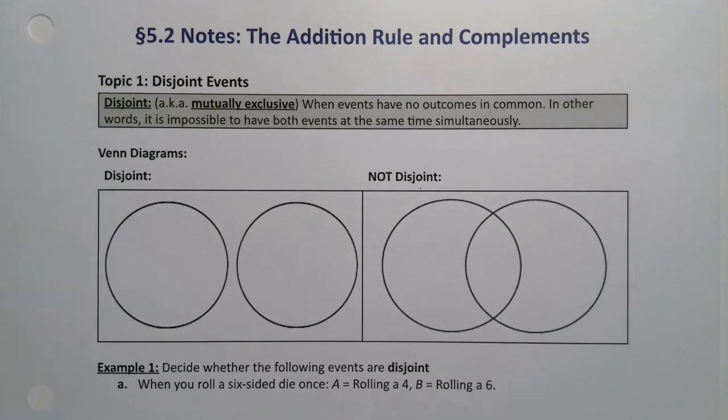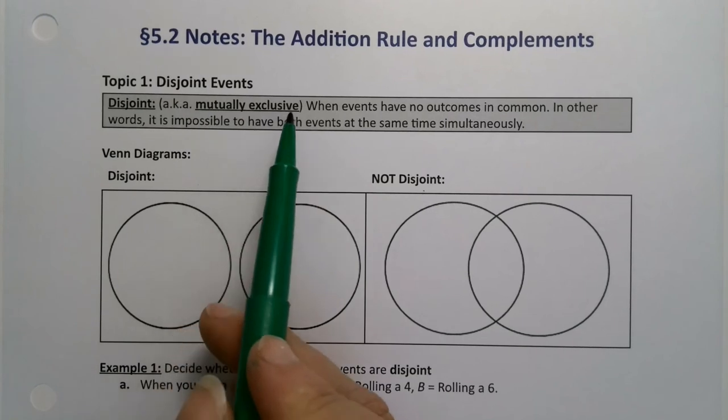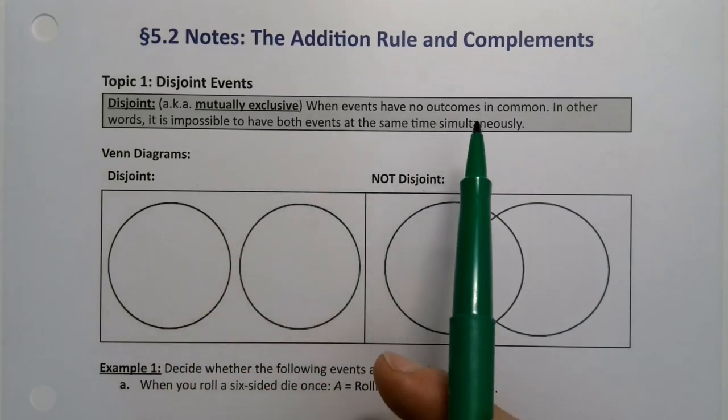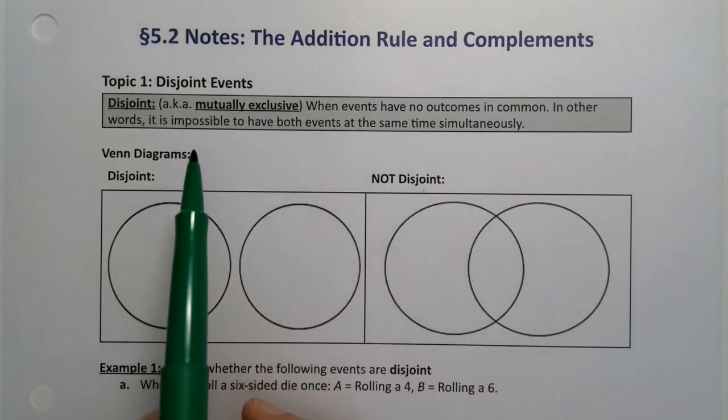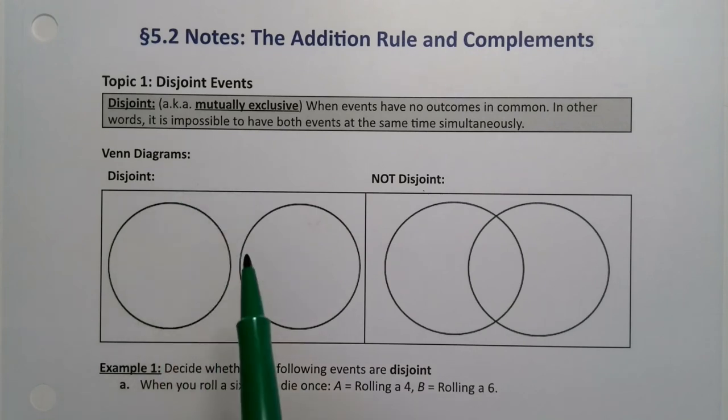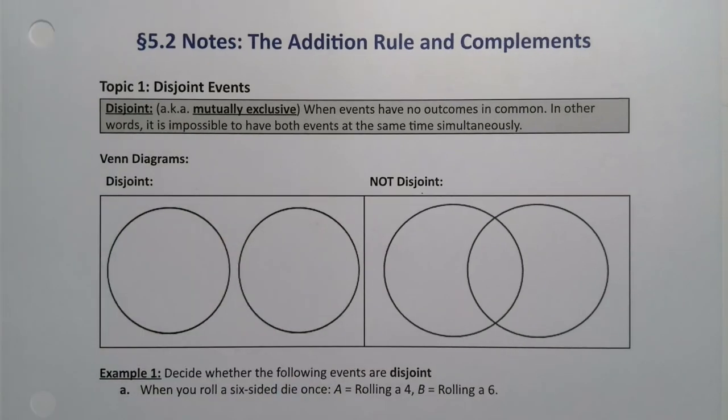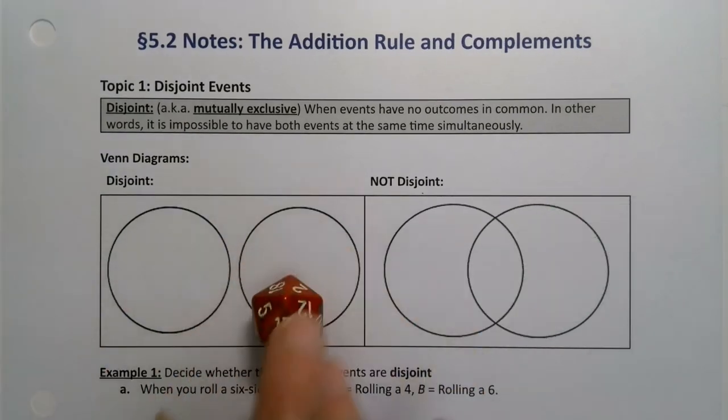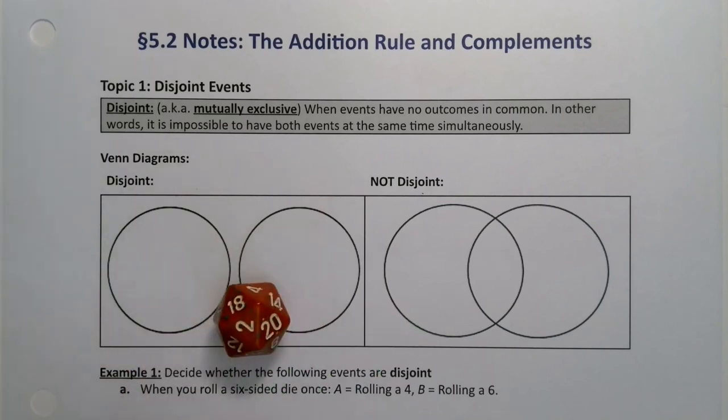Disjoint events, also known as mutually exclusive events, are events that have nothing in common. In other words, it's impossible to have both events at the same time simultaneously. So for a disjoint event, let's consider the humble 20-sided die, just for an example.